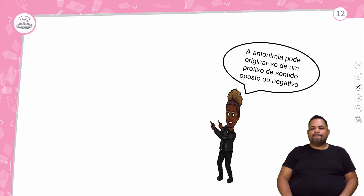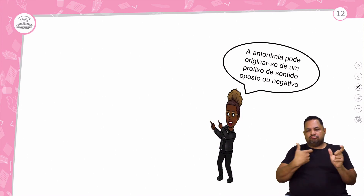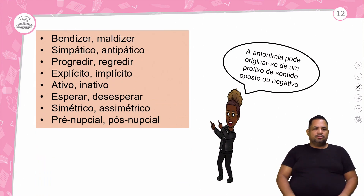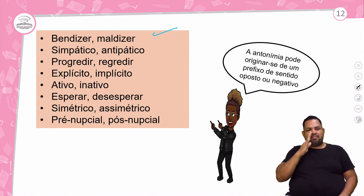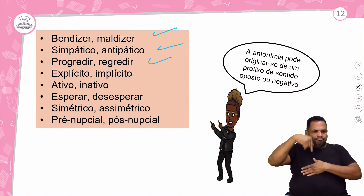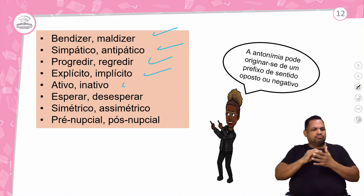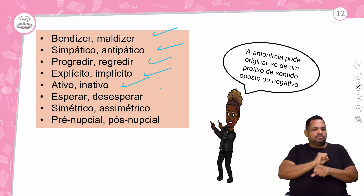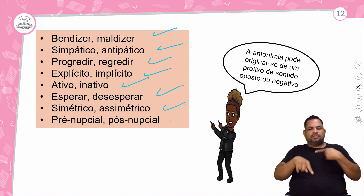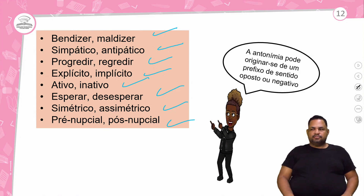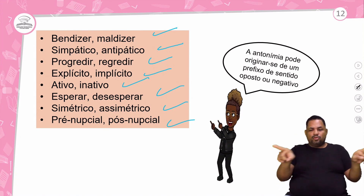A antonímia pode originar-se de um prefixo de sentido oposto ou negativo. Alguns livros vão trazer 'sinonímia' e 'antonímia' como termos. Exemplos: 'bem dizer' e 'mal dizer', 'simpático' e 'antipático', 'progredir' e 'regredir', 'explícito' e 'implícito', 'ativo' e 'inativo', 'esperar' e 'desesperar', 'simétrico' e 'assimétrico', 'prenupcial' e 'pós-nupcial'. Lembrando: sempre o oposto, o contrário, oposição.